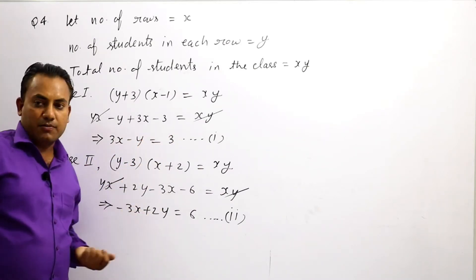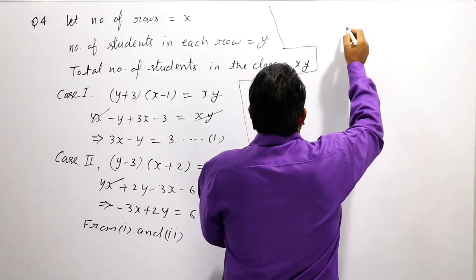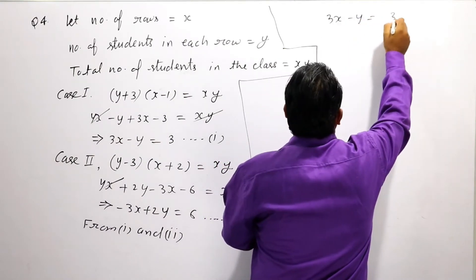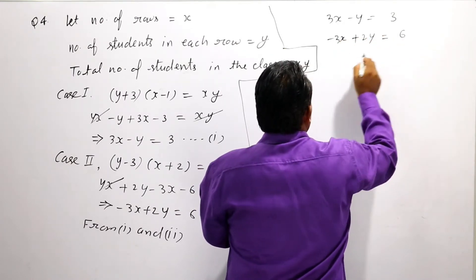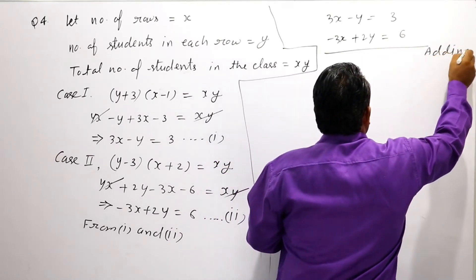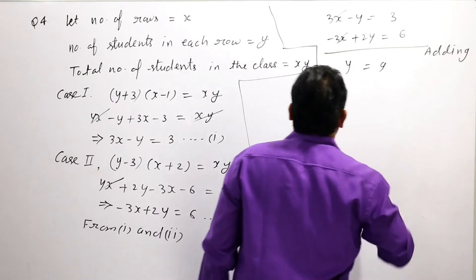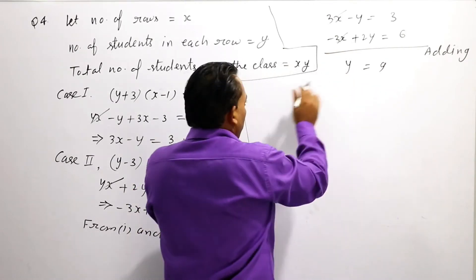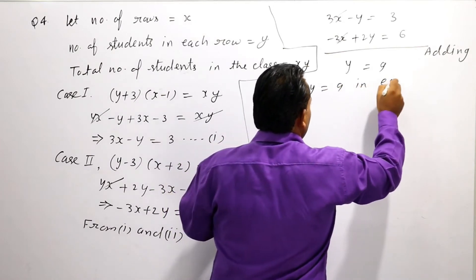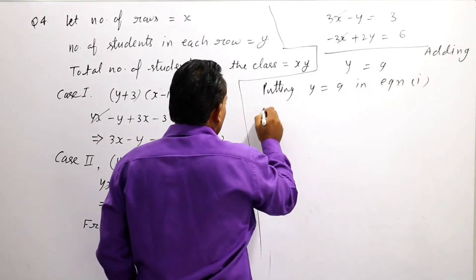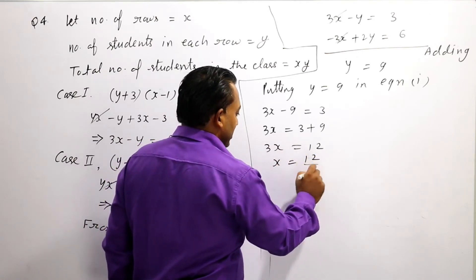अब first और second equation को elimination method से solve करेंगे। आप देख पा रहे हैं कि x के coefficients same हैं। Equation 1: 3x − y = 3, और equation 2: −3x + 2y = 6। Adding करने पर, 3x और −3x cancel हो जाते हैं, y = 9। Putting y = 9 in equation 1: 3x − 9 = 3, so 3x = 12, x = 4।